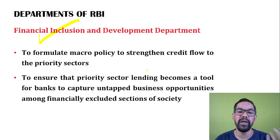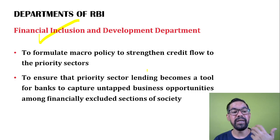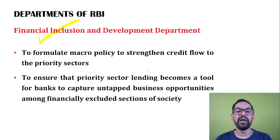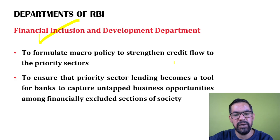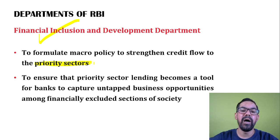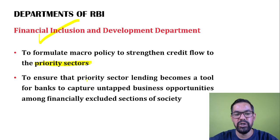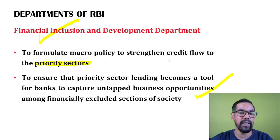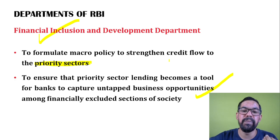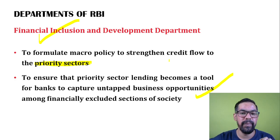The Financial Inclusion and Development Department conducts research and development on financial inclusion in India. It formulates micro-policy to strengthen credit flow to priority sectors such as agriculture, small-scale industries, weaker sections, and renewable energy. It also ensures that Priority Sector Lending (PSL) norms become a tool for banks to capture untapped business opportunities among financially excluded sections of society.